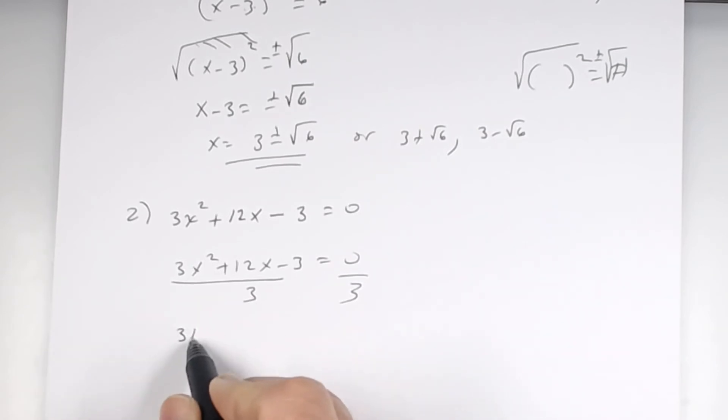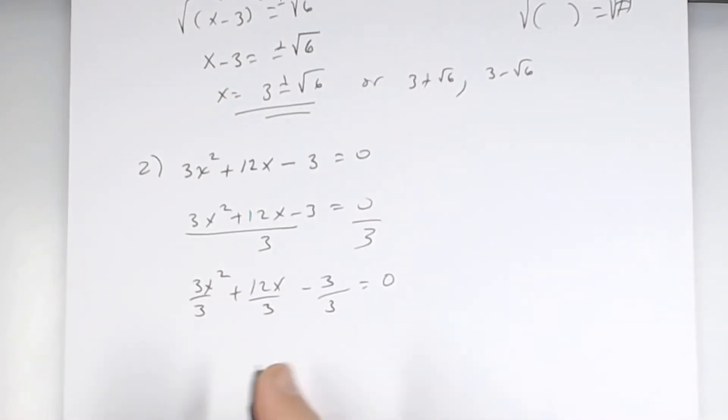But, basically, what's happening is you're saying 3x squared divided by 3 plus 12x divided by 3 minus 3 divided by 3. And, what's 0 divided by 3? 0. So, you get x squared plus 4x minus 1 equals 0.